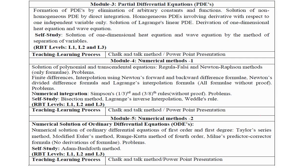When I move on to module 3, partial differential equations (PDE), you can concentrate only on the derivation of the one-dimensional heat equation and wave equation. If you feel uncomfortable solving PDE problems, go with only the derivation part and you can score a minimum of 7 marks.